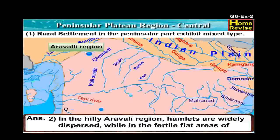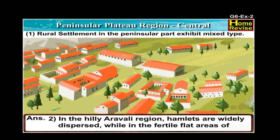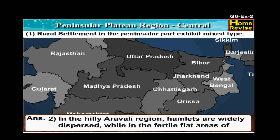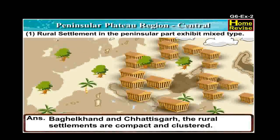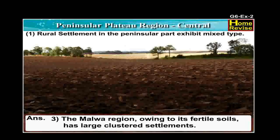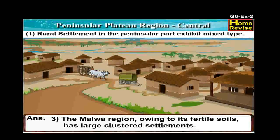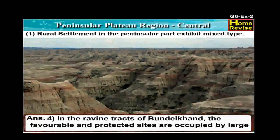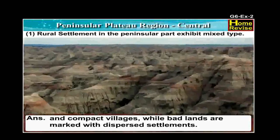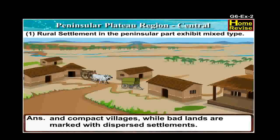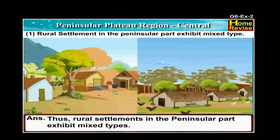In the hilly Aravali region, hamlets are widely dispersed, while in the fertile flat areas of Bagelkhand and Chhattisgarh, the rural settlements are compact and clustered. The Malwa region, owing to its fertile soil, has large clustered settlements. In the ravine tracks of Bundelkhand, the favourable and protected sites are occupied by large and compact villages, while badlands are marked with dispersed settlements. Thus, rural settlements in the peninsula part exhibit mixed types.